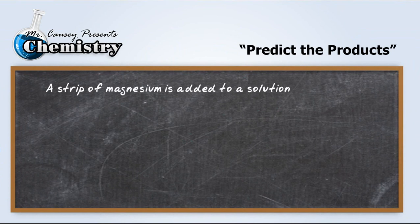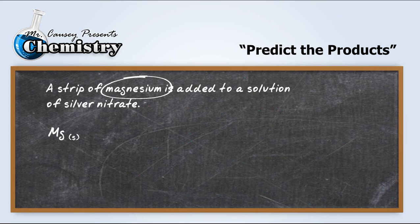A strip of magnesium is added to a solution of silver nitrate. The first thing we want to do is write the equation and predict the products. So first we have magnesium, and that's going to be Mg, and it's a solid, of course, it's a metal. Then we have a solution of silver nitrate. So there's our silver nitrate, and it is going to be AgNO3.